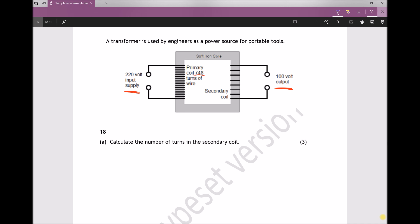The first part of Question 18 asks us to calculate the number of turns in the secondary coil. Now we have a very straightforward equation for this.